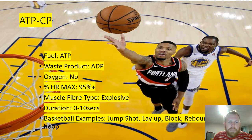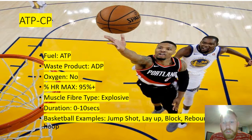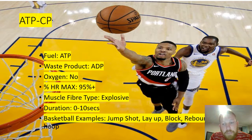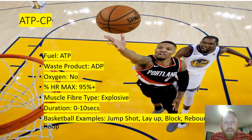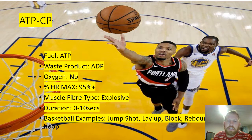ATP-CP system: the fuel is ATP, the waste product is ADP, there's no oxygen required, the percentage of heart rate max is 95 to 100%, and the muscle fiber type is very explosive. It lasts, depending on the athlete, but in general terms 0 to 10 seconds. Basketball examples could be the jump shot, the layup, block, rebound, drive to the hoop — basically anything that's explosive.